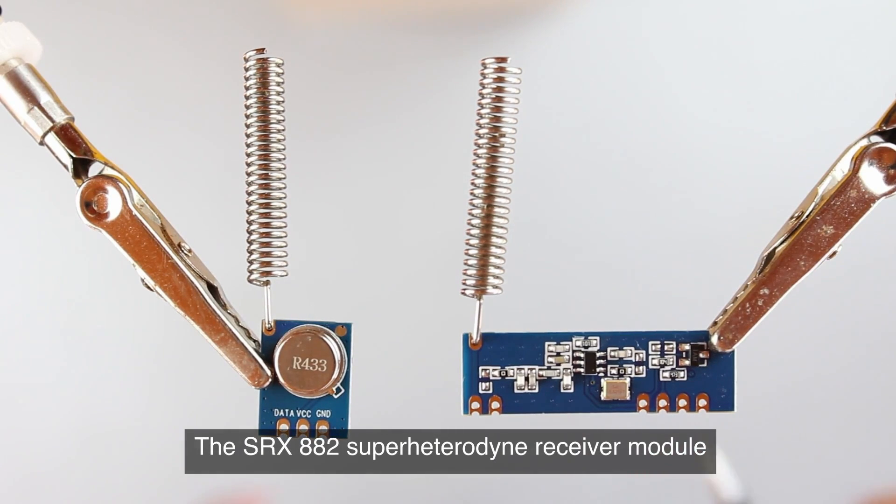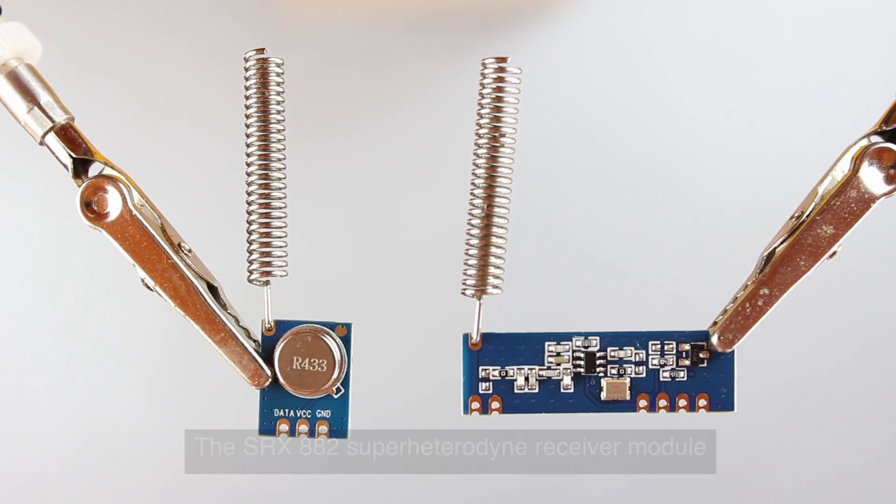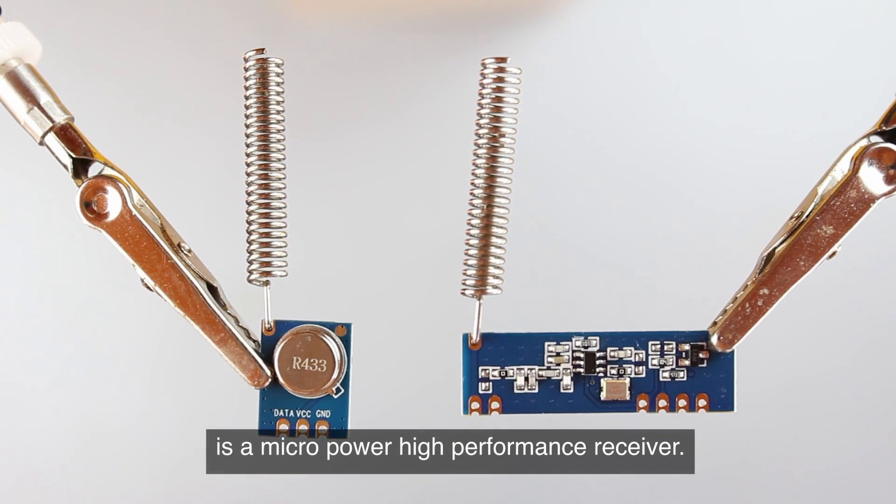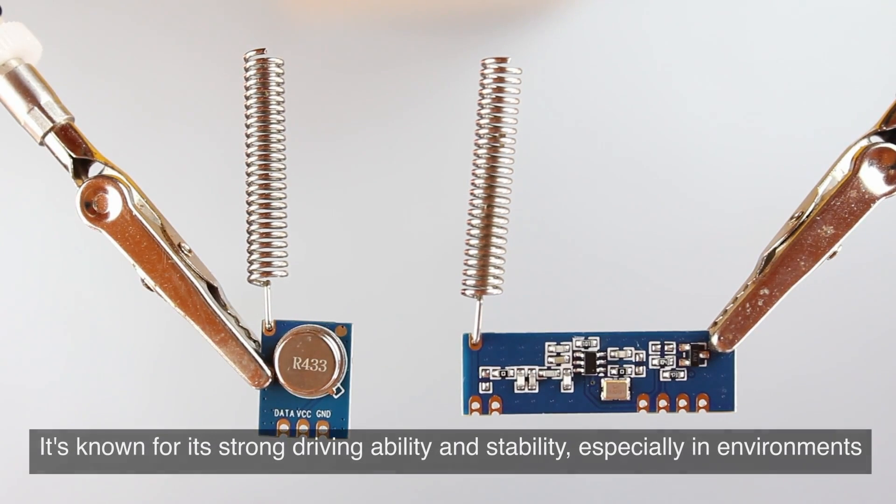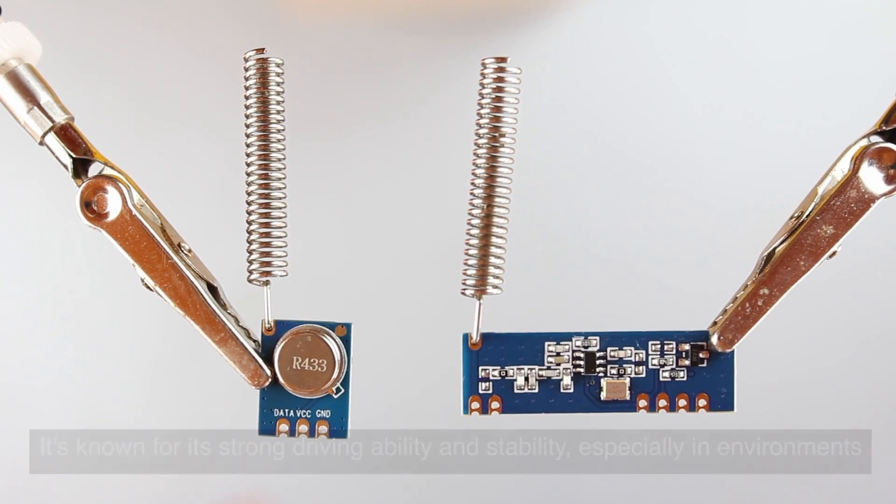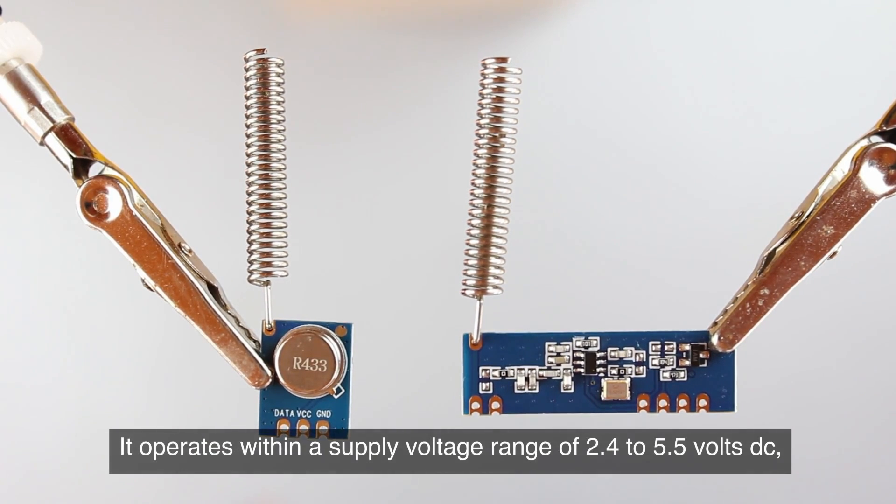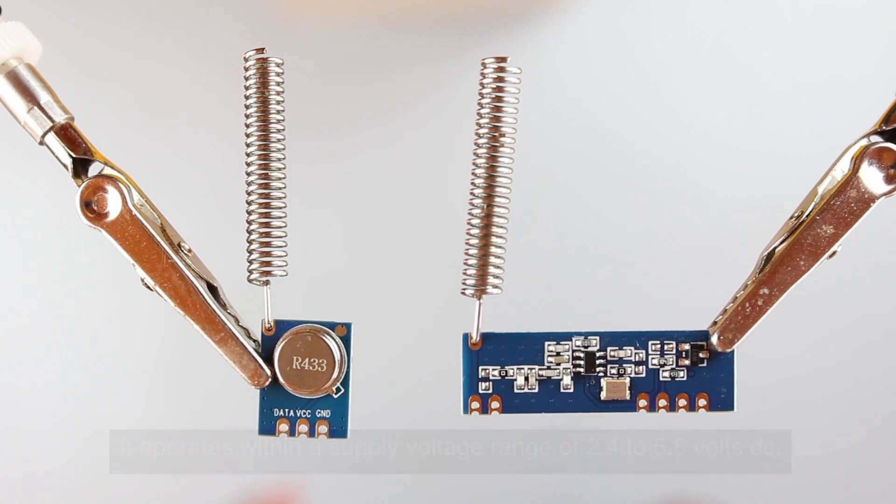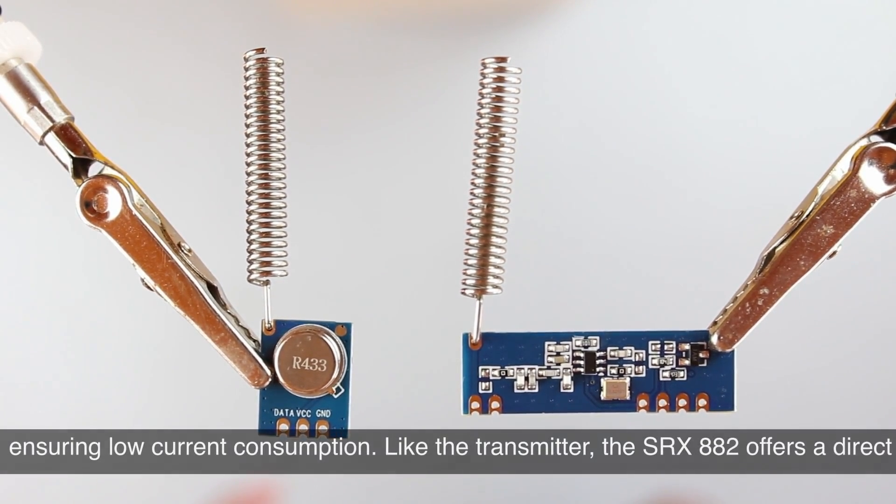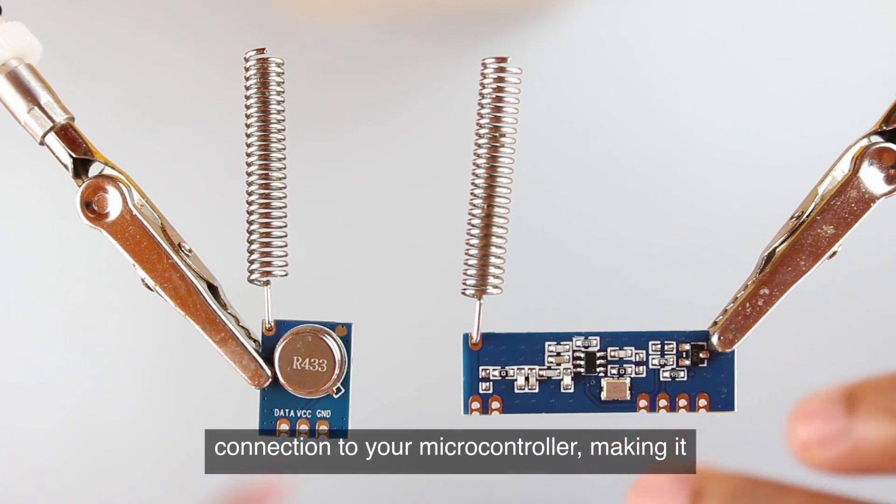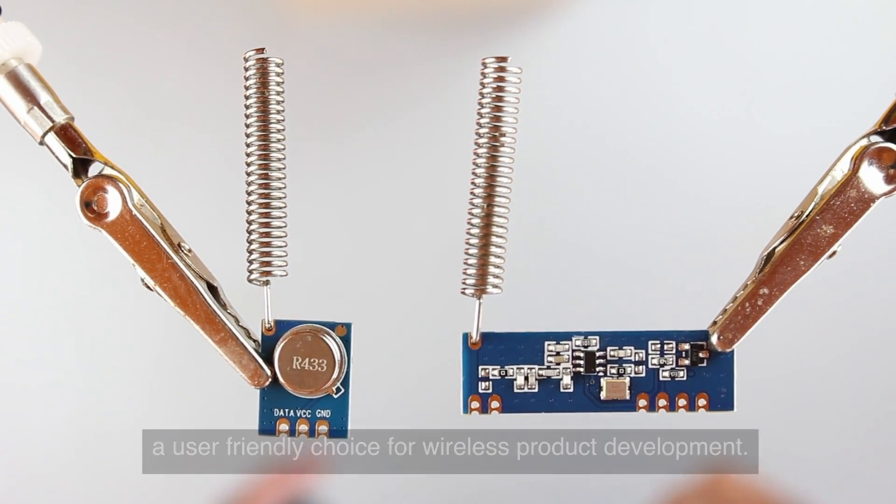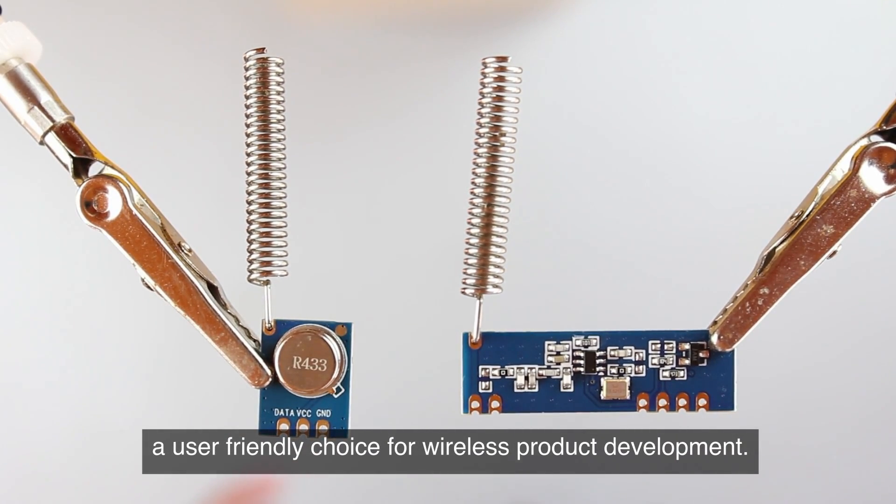The SRX882 Super Header 9 Receiver module is a micro power high performance receiver. It's known for its strong driving ability and stability, especially in environments prone to interference. It operates within a supply voltage range of 2.4 to 5.5 volts DC, ensuring low current consumption. Like the transmitter, the SRX882 offers a direct connection to your microcontroller, making it a user-friendly choice for wireless product development.